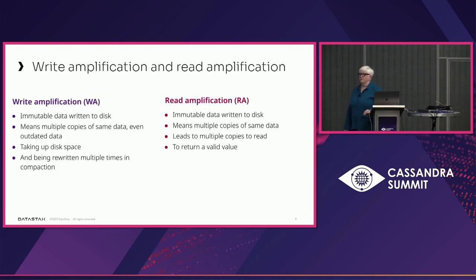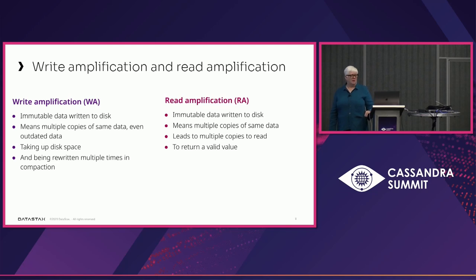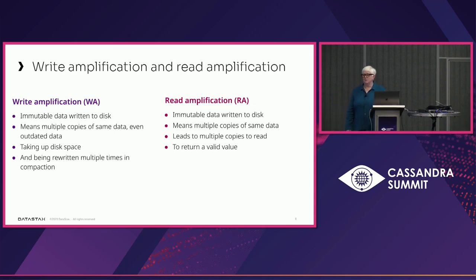Because of that immutability, you run into two problems: write amplification and read amplification. Both stem from the same problem — immutable data written to disk. With write amplification, you can end up with multiple copies of the same data, or even outdated data taking up disk space, with the potential for being rewritten multiple times through the compaction process. With read amplification, you may have to read multiple copies and figure out which is the valid value to return.